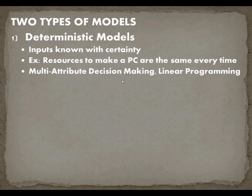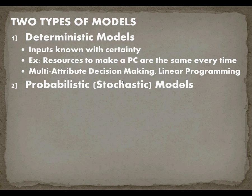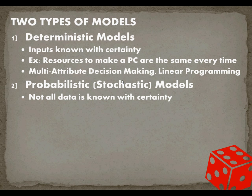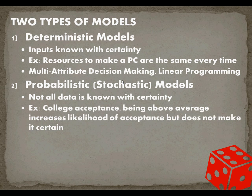The second type of model are probabilistic or stochastic models, and in these not all the data is known with certainty. There's an element of chance of how the outcome is going to turn out. For example, when you applied to college you might have been above average, which increases the likelihood of being accepted but doesn't make it certain.